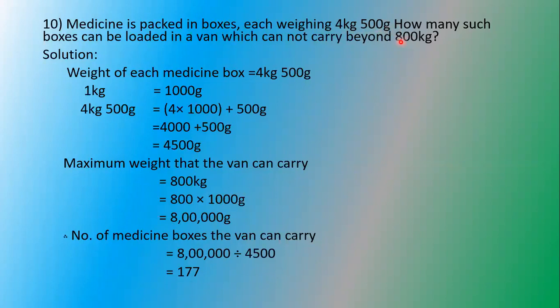Weight of each medicine box is 4 kilograms 500 grams. We will convert into the smaller unit — grams. One kilogram is equal to 1000 grams. So 4 kilograms 500 grams means 4 × 1000 plus 500, which equals 4000 plus 500 grams — that is 4500 grams.